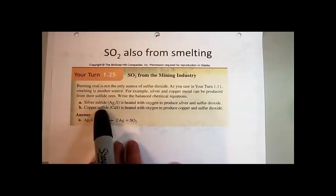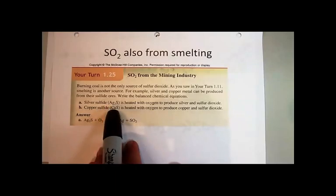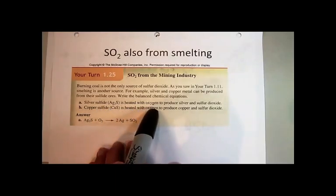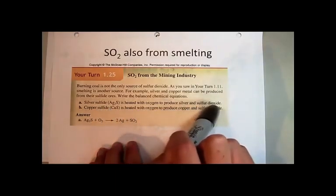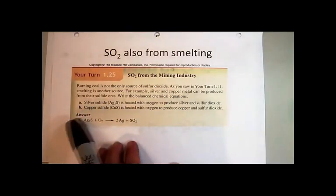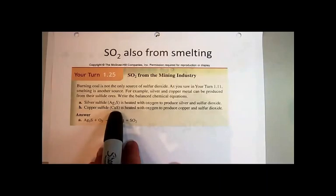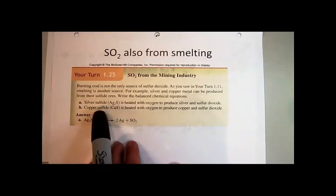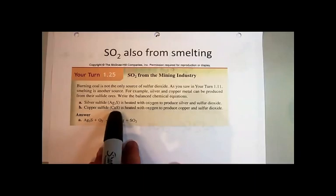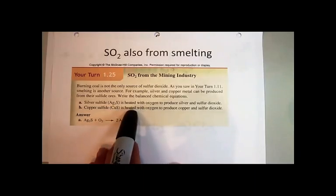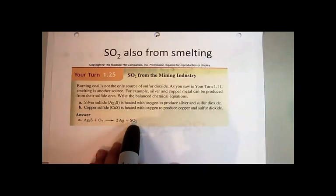Here's another one for you to try: copper sulfide is heated with oxygen to produce copper and sulfur dioxide. Copper isn't normally found in the ground as big chunks of pure copper — rather it's a mineral, found in rocks in the form of copper sulfide. Once it's found, it has to be purified, and that's called smelting. Sulfur dioxide is a byproduct in that case as well.